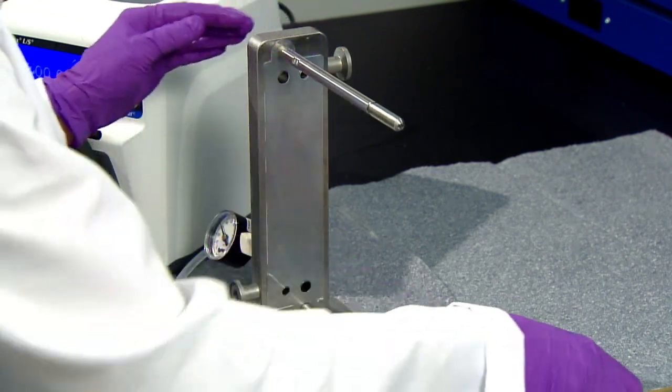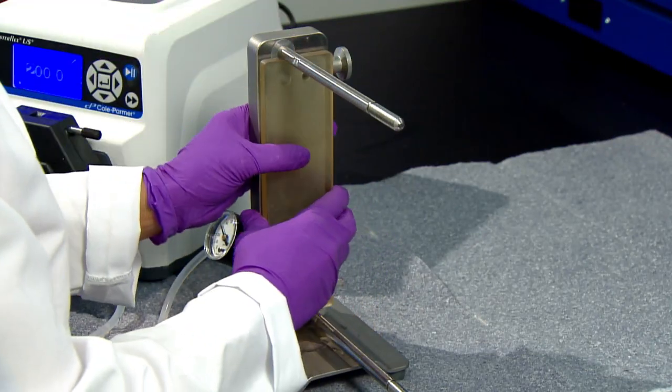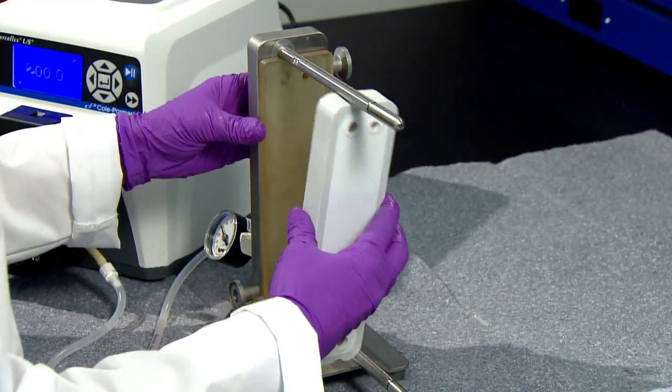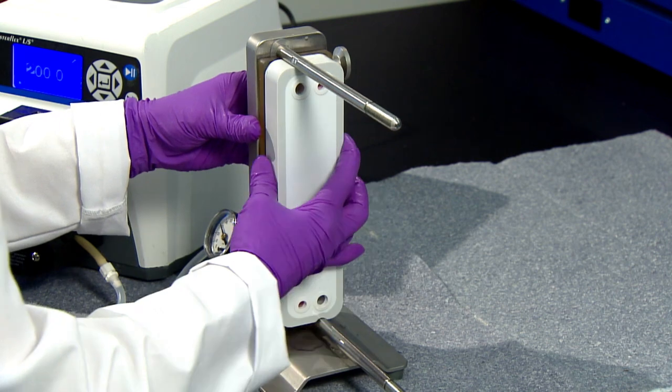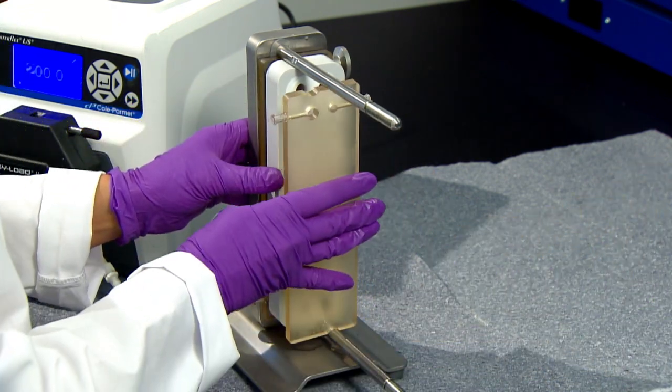The first diverter plate comes next, with feed port aligned with that of your holder. It is important to alternate cassettes and diverter plates, making sure to flip the orientation of the feed ports on consecutive diverter plates.